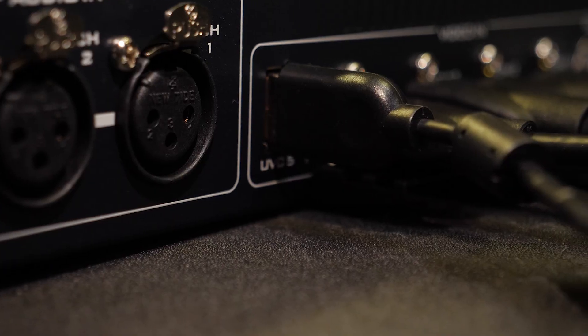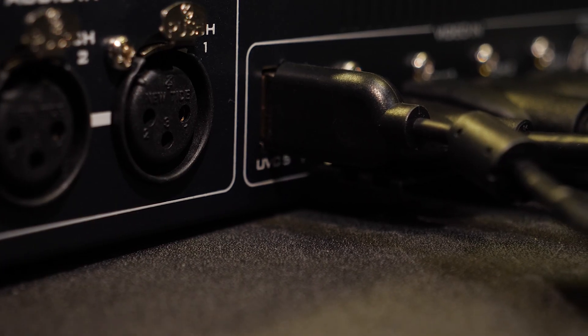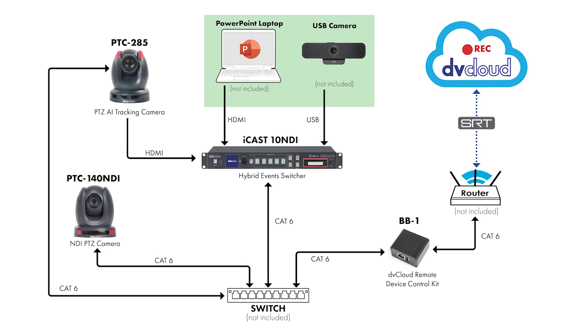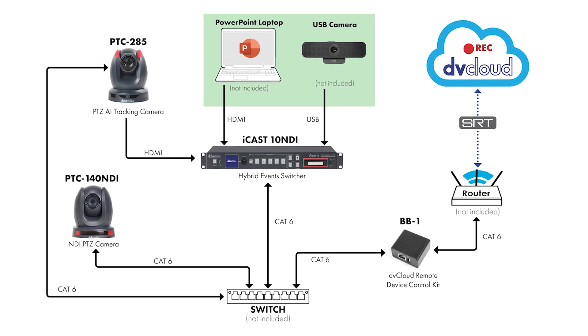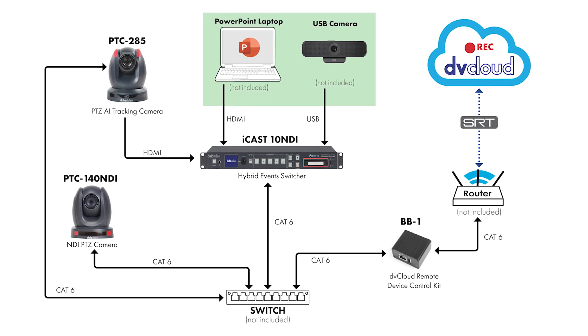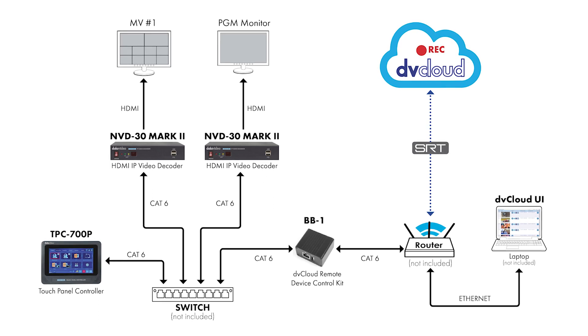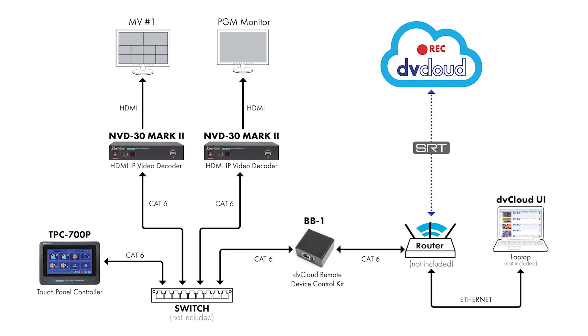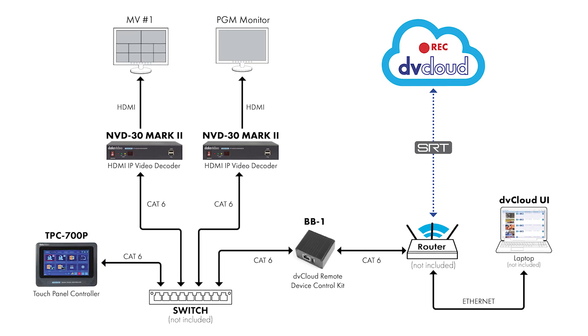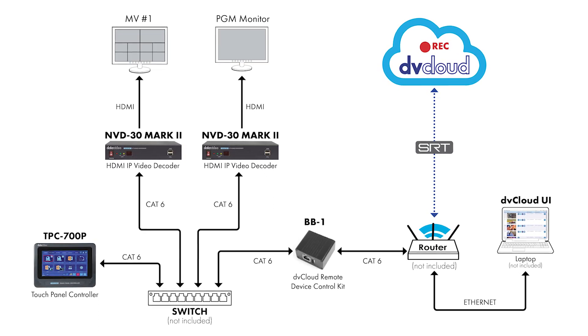That's just a USB camera, so you can plug it directly into the iCast 10. That's going from the venue to Rob through our DV cloud service. It's a really cool solution for anyone that needs to produce something remotely. Maybe Rob, you can explain all the gear in a little more detail about how you're doing it on your end.